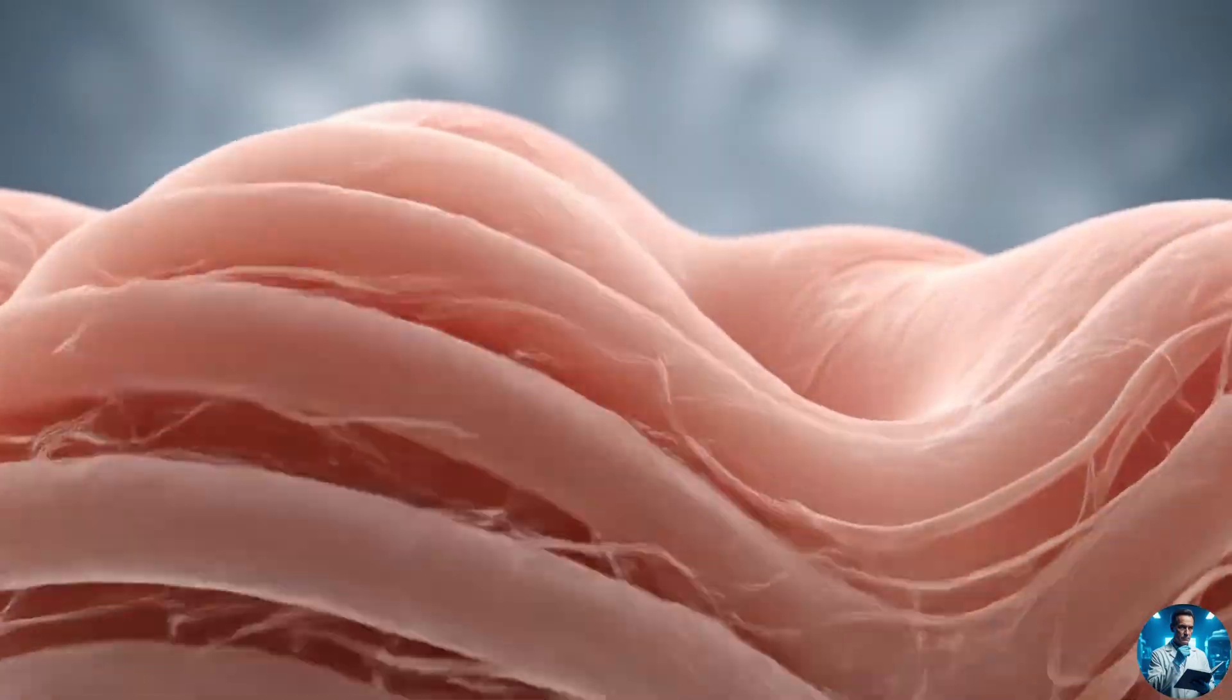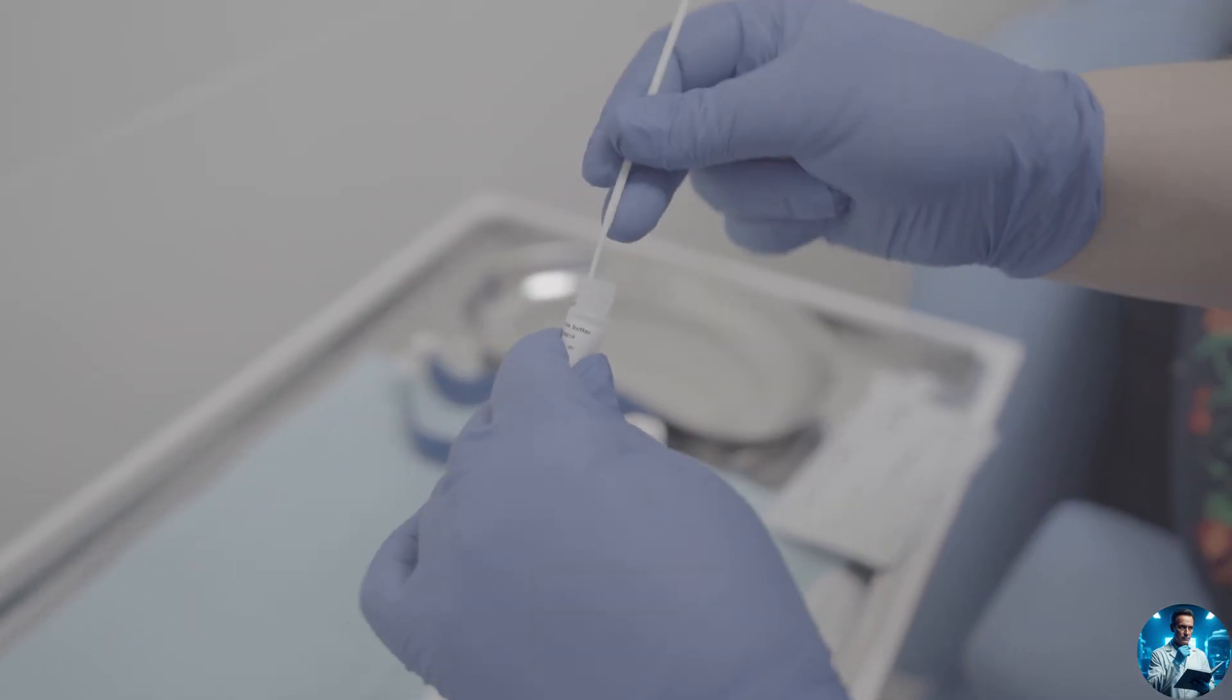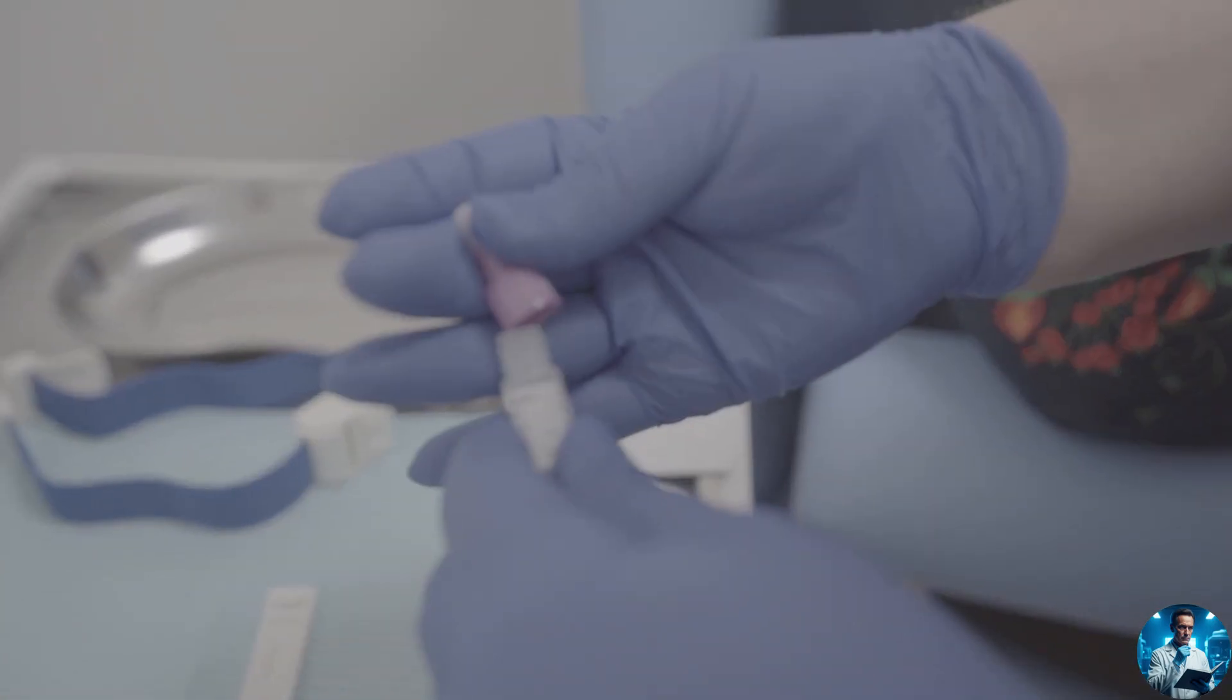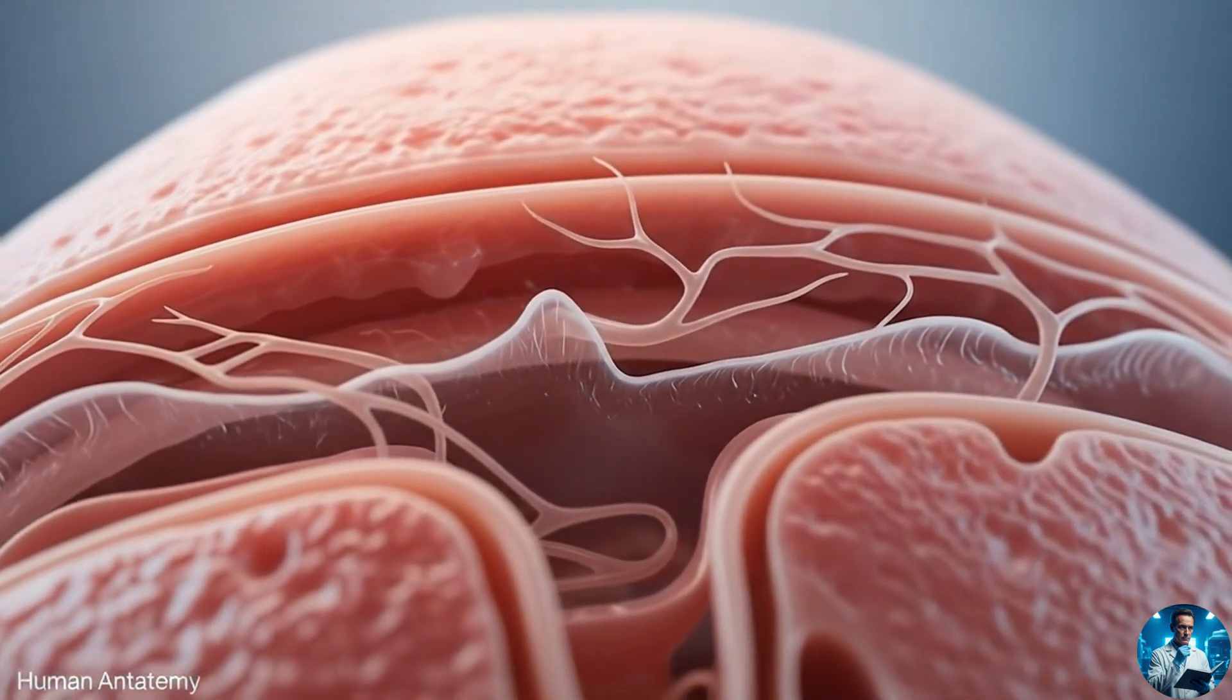Clinicians check genital health, looking for abnormalities or infection signs during full pelvic exams. They also assess nearby structures like the Skene's glands near the urethra, which help with lubrication during arousal.